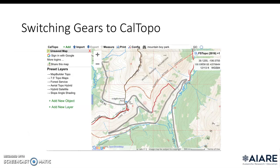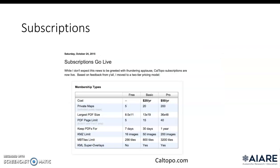We'll switch gears to CalTOPO here. CalTOPO.com is the website — you can use CalTOPO for free. It is recommended that if you end up using CalTOPO professionally, or essentially make a living off of it, you get a membership, either a basic or a pro. This table shows some of the advantages if you decide to pay. The basic is $20 a year, the pro is $50 a year, and you do get more features.